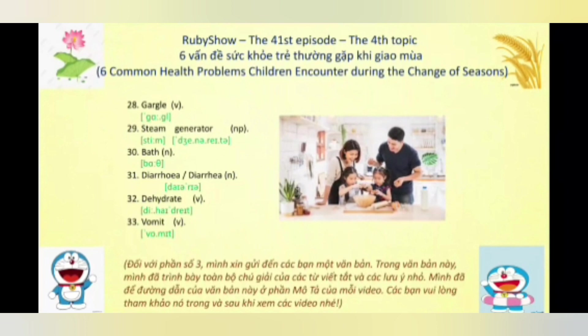Từ số 31, ở đây chúng ta có 2 danh từ có cùng cách đọc và nghĩa. Cả 2 từ này đều được đọc là 'diarrhea,' nhấn âm 3. Và chúng cùng có nghĩa là bệnh tiêu chảy trong y học.